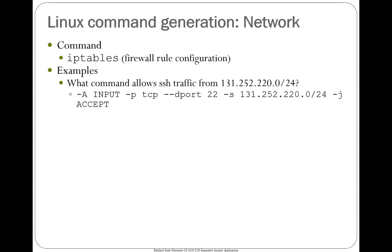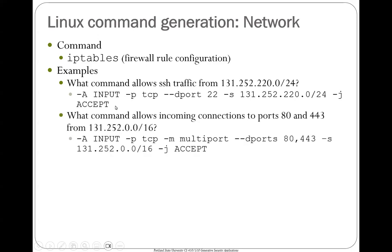Some examples: what command allows SSH traffic from the subnet 131.252.220.0/24? It will say: add a rule on the input chain. Iptables has an input chain and an output chain based on whether packets are being received (input) or sent (output). On the input chain, for TCP packets destined for SSH port 22, with the source of this CIDR prefix, accept that packet. That's a way of getting this plain-text natural language question into an actual command.